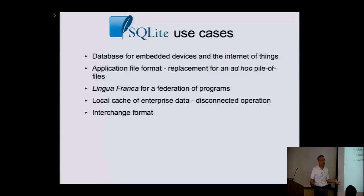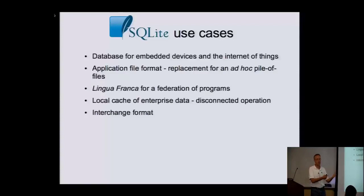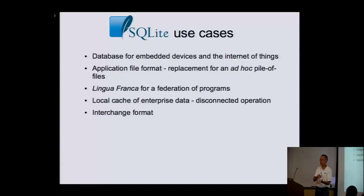It's often used as a local cache for an enterprise database — you download data relevant to the device so it can continue to operate while off network. You're on your phone going through a tunnel and you've lost reception. It's also good as an interchange format. For example, the program guide on your cable TV that comes down to the set-top box — in a lot of cases it's being beamed from the satellite to your set-top box as an SQLite database, and then the little window showing what's on is just a query.